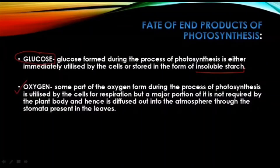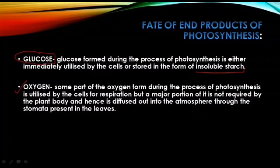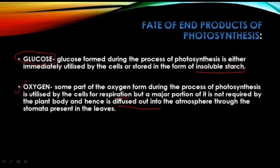Some part of the oxygen produced as a byproduct during photosynthesis is used for cellular respiration — the breaking down of glucose to release energy inside the cells. However, a large portion is not required by the plant body, so it is diffused out into the atmosphere through the stomata present on the leaves.